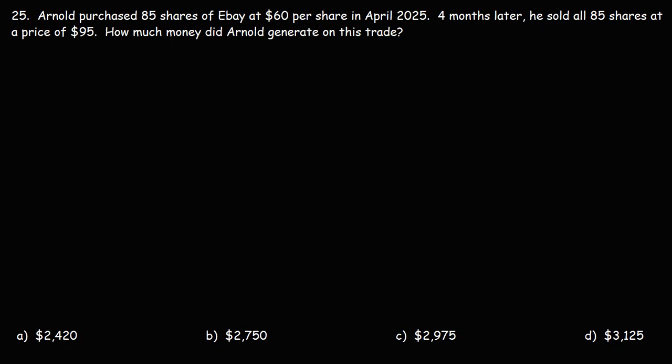Now there are two ways in which we can get the answer. One way is to multiply the number of shares times the price per share — that will give us his original investment. Then we can multiply how much he sold each share for times the number of shares, find the difference, and that will be his total profit. A much simpler way is to take the difference between what he sold each share for minus what he bought it for, and then just multiply it by the total number of shares.